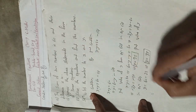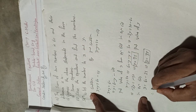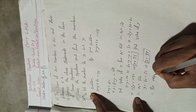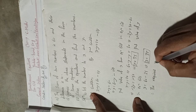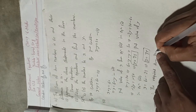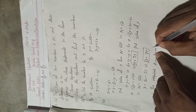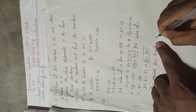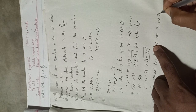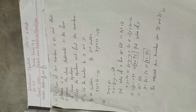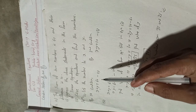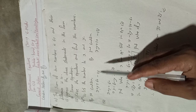Therefore, the required two numbers are 35 and 25. This is the complete solution of question 1a. In the next video I will come with 1b.